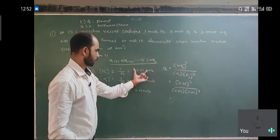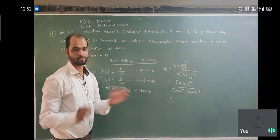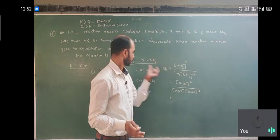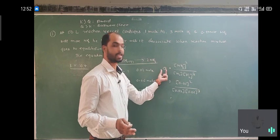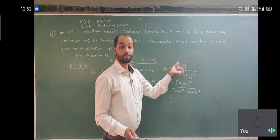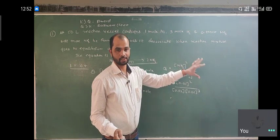Okay, so we first of all calculate the concentration in 50 liter volume. Then we have the equation for Q. Using this equation we can calculate Q. Q is the ratio of the product of products raised to their proper power and the product of reactants raised to their proper power.